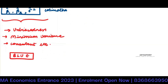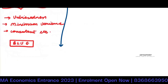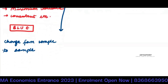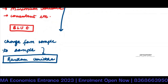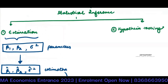We also said that these estimators, since their value will change from sample to sample — as you change the values in the sample, the values of betas will also change. So they are random variables, they are random in nature. But estimation is only half the thing. The second half of statistical inference is called hypothesis testing.